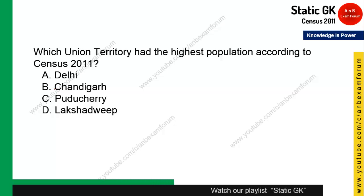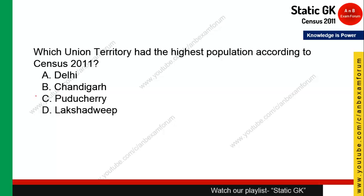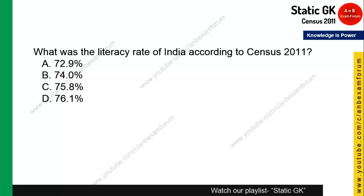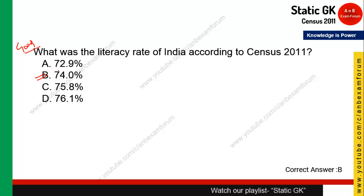Question 8: Which union territory has the highest population according to Census 2011? Delhi is very crowded, so the answer is straightforwardly Delhi. Question 9: What was the literacy rate of India according to Census 2011? It is approximately 74% — note this down in your notebook.